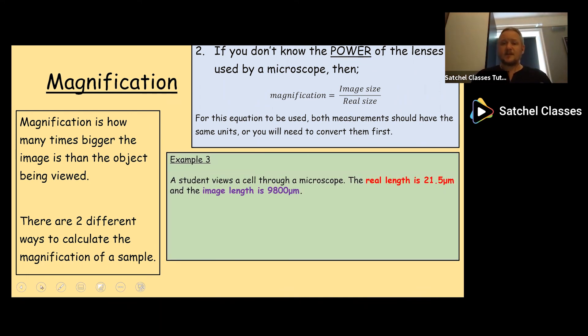Let's take a look at an example. For the purposes of this I'm going to keep the units of the image and the real size the same. A student views a cell through a microscope. The real length is 21.5 micrometers, that's the Greek letter mu next to the 5, and the image length is 9,800 micrometers. What was the total magnification of the cell? The total magnification is the image divided by the real size. Again I've highlighted it in different colors and put the equation down and I'm putting the numbers in the placeholders. So image is 9,800 divided by real is 21.5, stick it in the calculator and you'll get an answer of 455.8, so I've rounded it up to 456 because that's one decimal place. Total magnification.